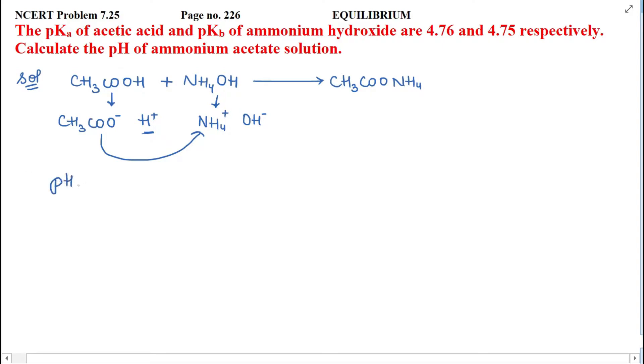It's a very simple formula. pH equal to 7 plus half pKa minus pKb. So 7 plus half pKa ki value, how much is given? That is 4.76. So you just put the value 4.76 minus 4.75, pKb ki value given.